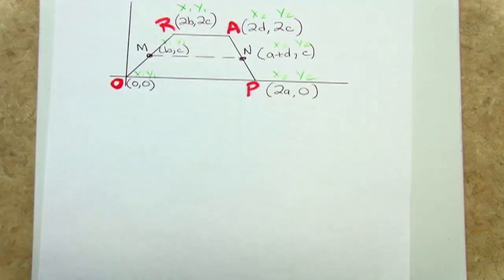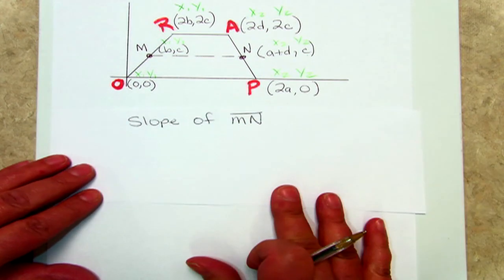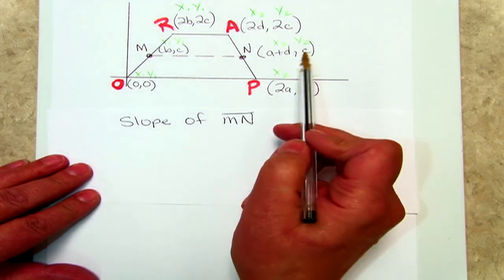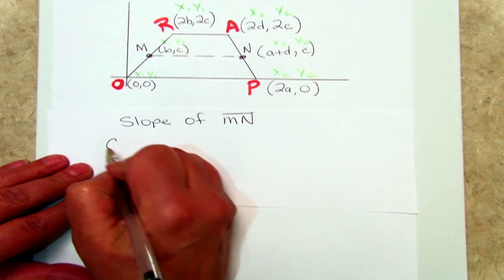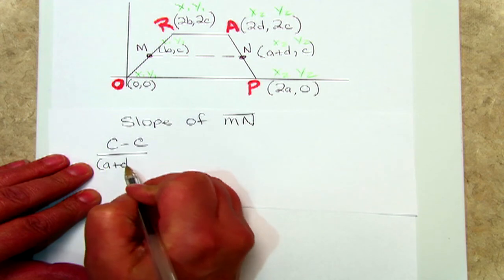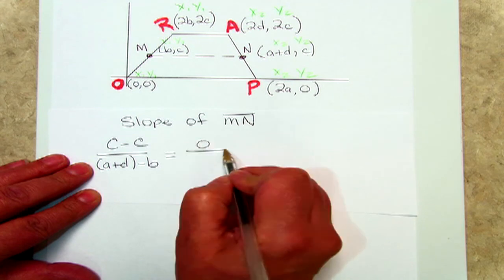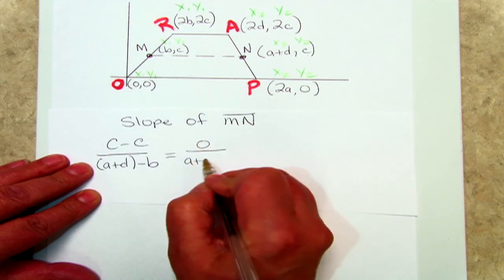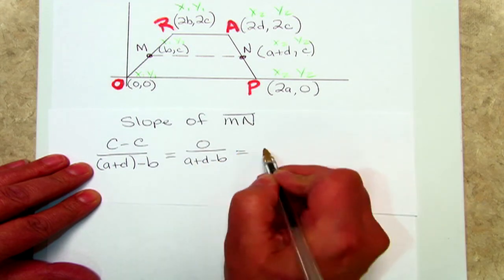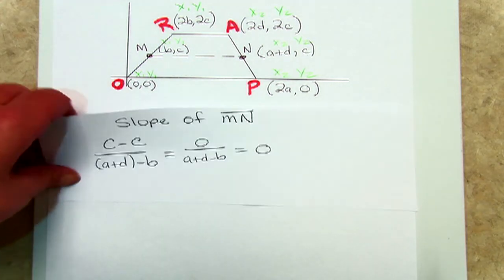Let's find the slope of MN. I already have the coordinates labeled. y2 minus y1, c minus c, x2, a plus d, minus x1, minus b. c minus c is 0 over a plus d minus b, and again, this is just 0. So the slope of MN is 0.